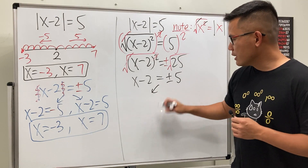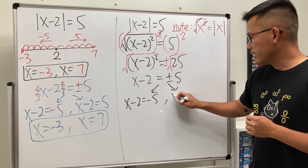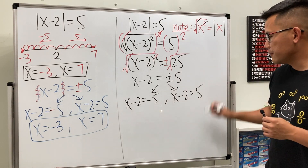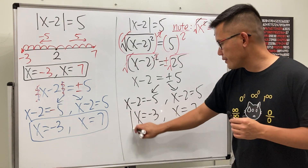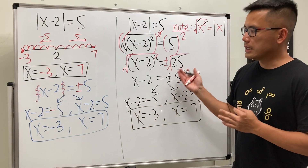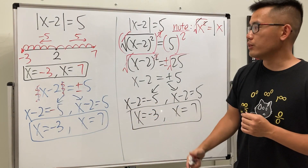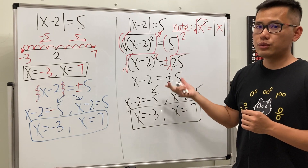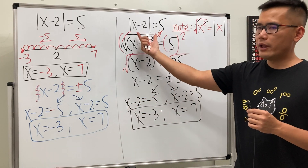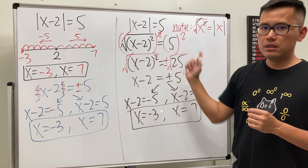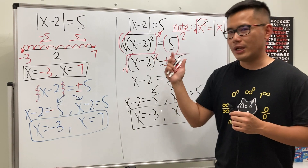So we get x minus 2 equals negative 5, giving x equals negative 3, and x minus 2 equals positive 5, giving x equals 7. This method explains why we put the plus or minus after removing the absolute value. It's a longer version, but if we have more than one absolute value part, this approach may work better. Check out my next video or subscribe!